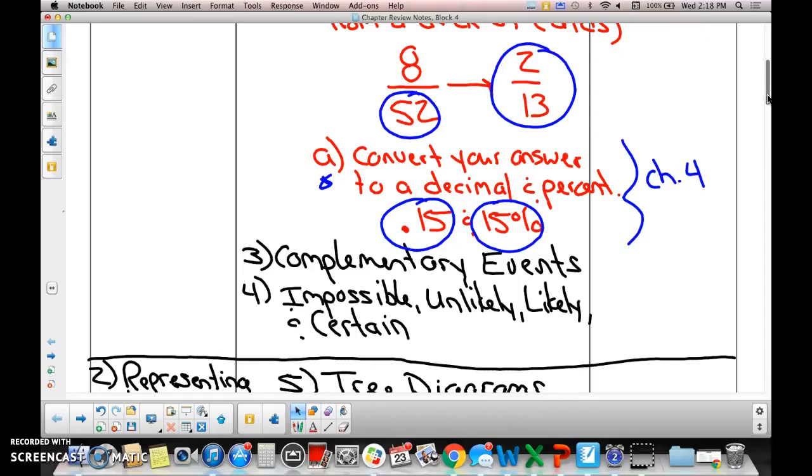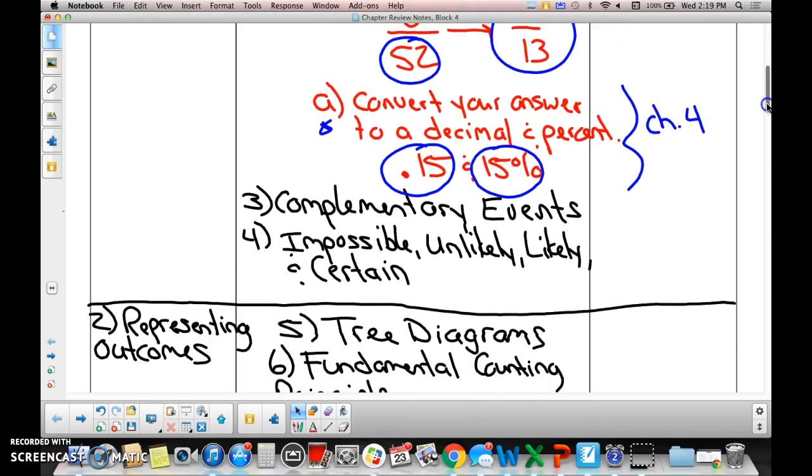Complementary events - an event and its opposite, right? Impossible, unlikely, likely, and certain. Know what each of those four things mean.